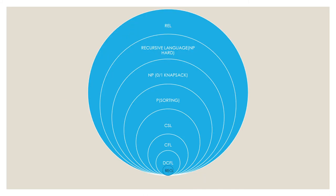The final diagram shows the language hierarchy. The lowermost set is regular language, then DCFL, then CFL, then CSL, then P class problems which include sorting algorithms, then NP problems which include the 0/1 knapsack problem with approximately exponential time complexity of O(2^n), then recursive languages corresponding to NP-hard problems, and then recursively enumerable languages. For time complexity: P class uses deterministic algorithms with O(n^k); NP and NP-complete problems have O(2^n); and NP-hard problems have time complexity greater than O(2^n).